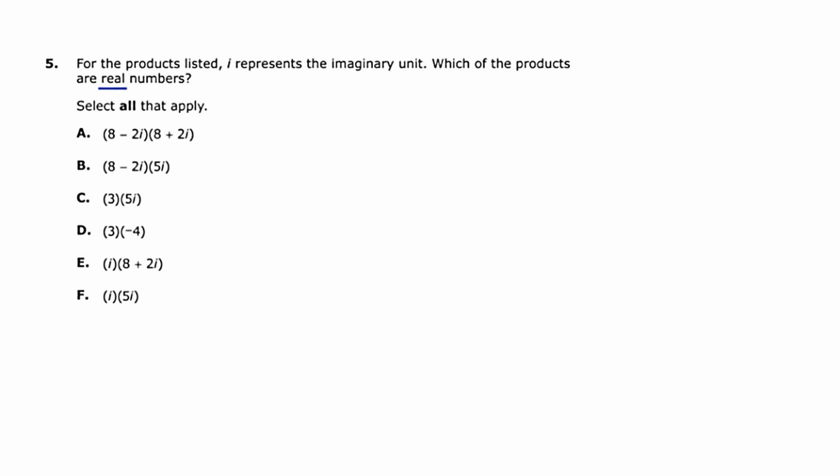So let's start with A, and what we're doing here is we're multiplying two complex numbers together, which is going to require foiling. So let's see, I'll put a little A here to designate that that's what I'm doing. And foiling, I'm going to get 64. The outer and the inner are going to cancel out, and then I'm going to have minus 4i squared.